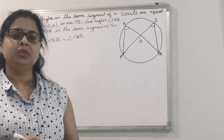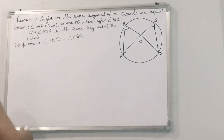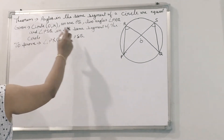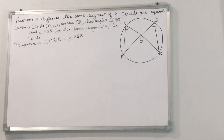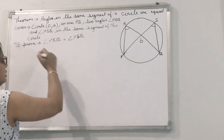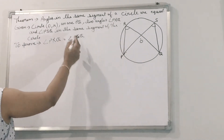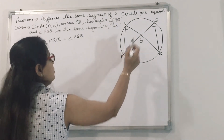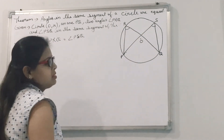Hello everyone, this is Guderian here in the Roshigarana tutorial. Today's topic is we have to prove the theorem: angles in the same segment of a circle are equal. Given a circle with center O and radius R, and chord PQ, we have angles PRQ and PSQ in the same segment of the circle.